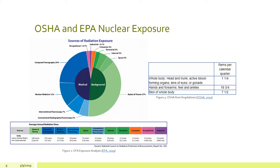On the right here is a figure from the OSHA-REM regulations that shows the distribution limitations between the whole body, head, trunk, active blood-forming organs, lens of eyes, or gonads, which are high cell division rate areas, which are more susceptible to DNA damage from ionizing radiation.